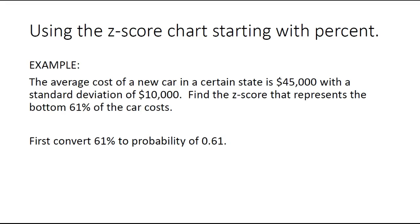Sometimes you need to go the other direction—you can use the z-score if you start with a percent. The average cost of a new car is $45,000 with a standard deviation of $10,000. Find the z-score that represents the bottom 61% of car costs. Keep in mind that 61% is a probability of 0.61.